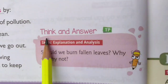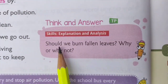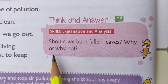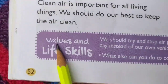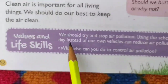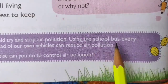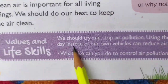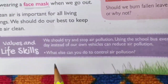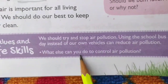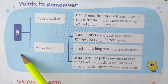Think and answer — Skills: Explanation and analysis. Should we burn fallen leaves? Why or why not? Give your answer in your own words. Values and Life Skills: We should try and stop air pollution. Using the school bus every day instead of our own vehicles can reduce air pollution. What else can you do to control air pollution? Children, this is the flowchart of air.